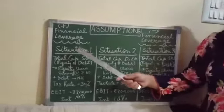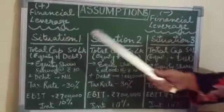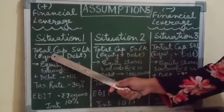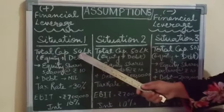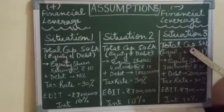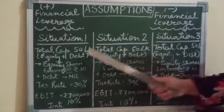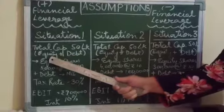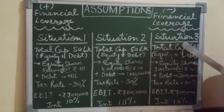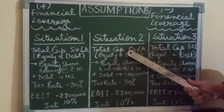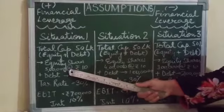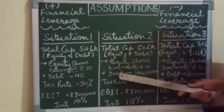We have taken three situations. In all three situations, the total capital employed is 50 lakhs. This total capital of 50 lakhs is a combination of owner's funds and borrowed funds — equity and debt. However, the amount of debt is assumed to vary across the three situations.